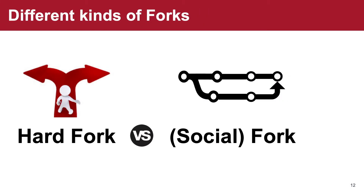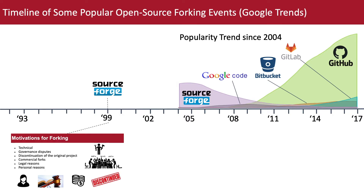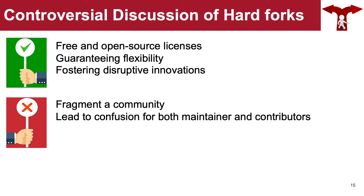So we have seen two different types of forks. To distinguish these two, we define the notion of forking where people create forks with the goal of splitting the community as hard forks, and GitHub-style forks — meaning forking with the intention of contributing back — as social forks. Here's the timeline of some popular open source platforms, and the motivations of forking have been primarily studied on SourceForge before the advent of fork-based development.